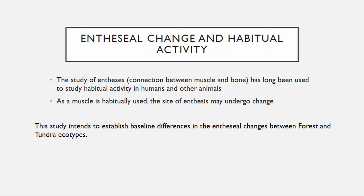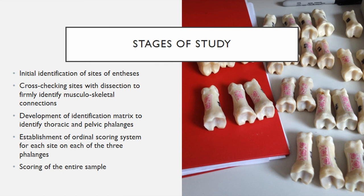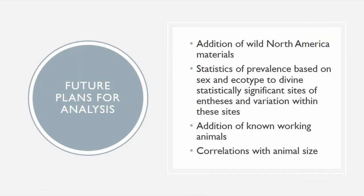To this point, we have undertaken data collection stages of this research and scored our entire Finnish sample. That included initial identification of sites of entheses, cross-checking these sites with dissection, development of an identification matrix to identify thoracic versus pelvic phalanges, establishment of an ordinal scoring system, and then scoring the entire sample. While further analysis remains, initial findings do support that there are differences in some enthesial changes in certain sites according to ecotype, but we need to dig deeper into this information to find out exactly what that means. Future plans include a potential addition of North American materials to counter the domestic-wild division, looking at sex and ecotype, adding working animals, and looking at animal size for comparison.